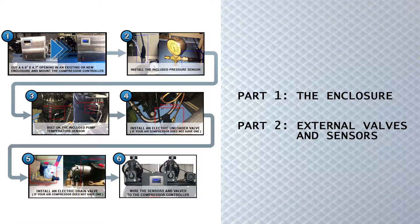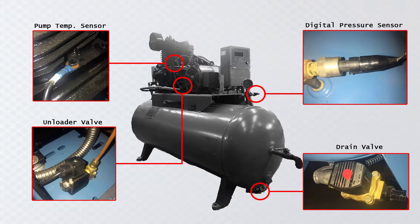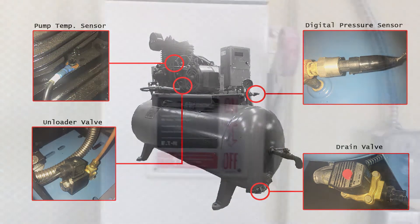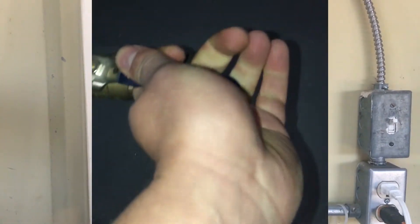The compressor controller installation can be broken down into two parts. Part 1 is the enclosure and part 2 is external valves and sensors. Before you begin, you need to make certain that the power to the air compressor is disconnected and the tank is completely depressurized.